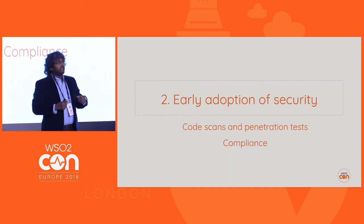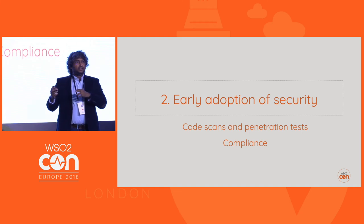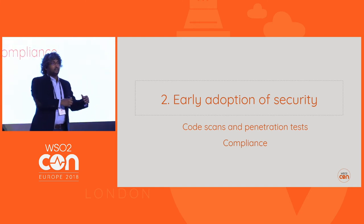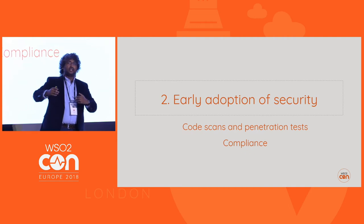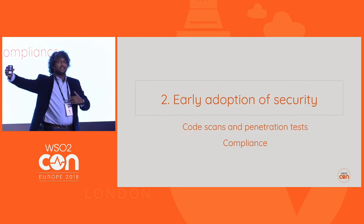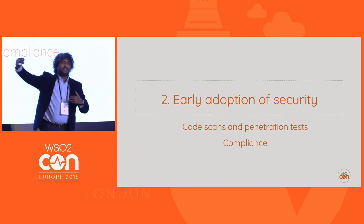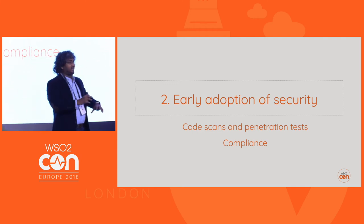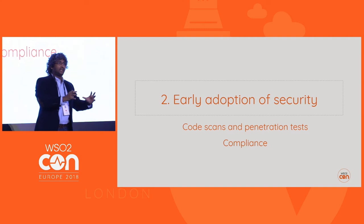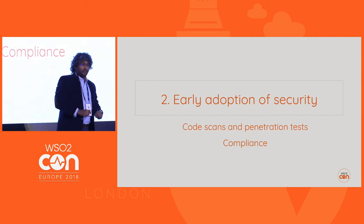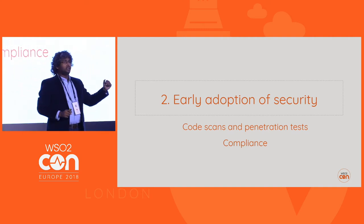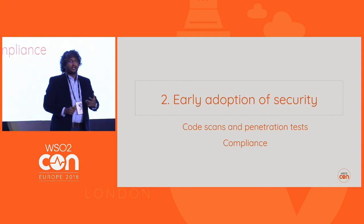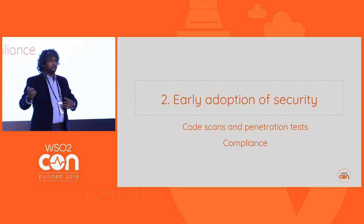Number two: early adoption of security. This again comes under shift-left — you don't have to wait until your changes reach pre-production or later stages. You can integrate code scans, penetration tests, and tools like that in very early stages of the pipeline to make sure the code you push through environments is in agreement with your customers' compliance requirements.